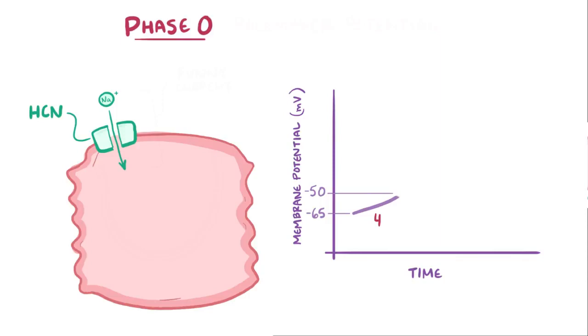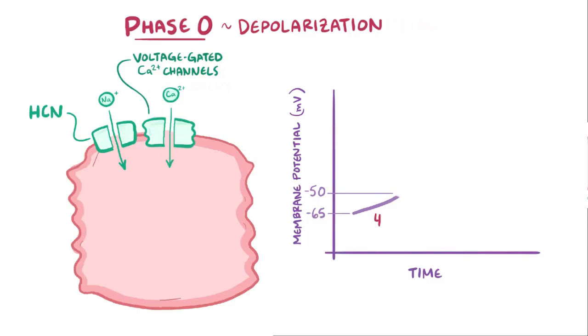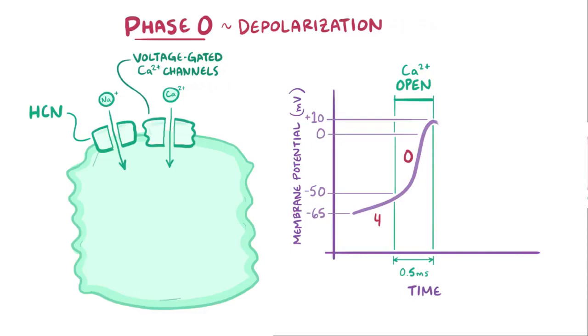Now after phase four is phase zero, and this phase is known as the depolarization phase, even though the cell was slowly depolarizing in phase four. Once the cell's membrane potential reaches about negative 50 millivolts, voltage gated calcium channels start to open up, which allows calcium to flow into the cell. With sodium and calcium flowing into the cell, the membrane potential rises all the way up past zero millivolts and into positive territory, peaking out at about plus 10 millivolts. This happens super fast, lasting only about 0.5 milliseconds. Those calcium channels stay open until it hits about the plus 10 millivolt mark, at which point they start to close.